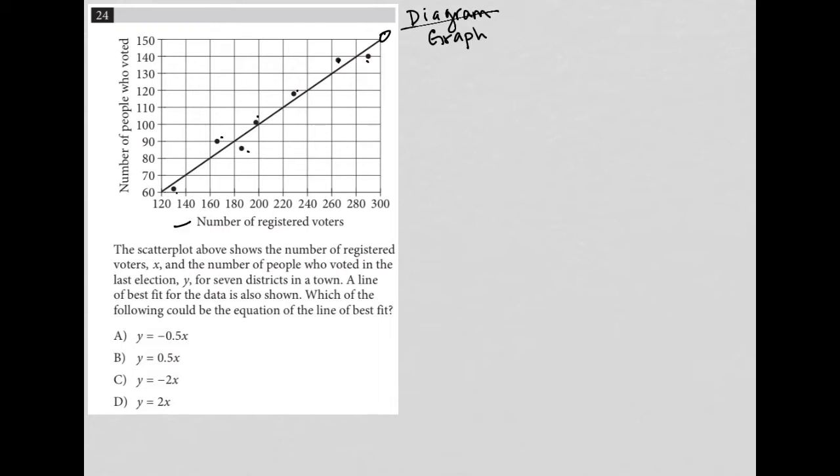The x-axis is number of registered voters. The y-axis represents number of people who voted. The scatter plot shows the number of registered voters x and the number of people who voted in the last election, y, for seven districts in a town. These dots represent the seven districts, these points on the graph. A line of best fit for the data is also shown.